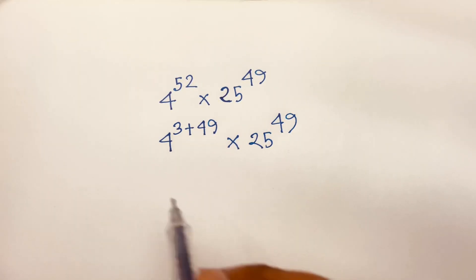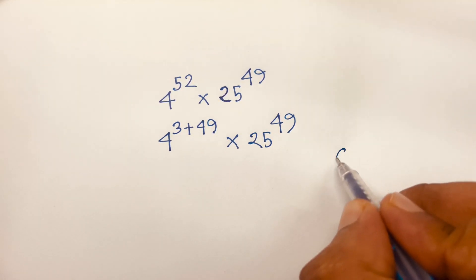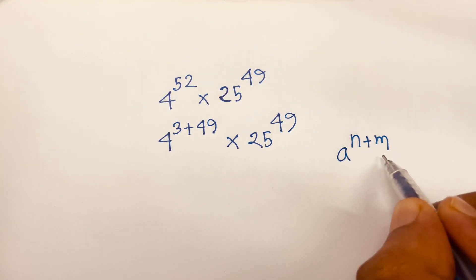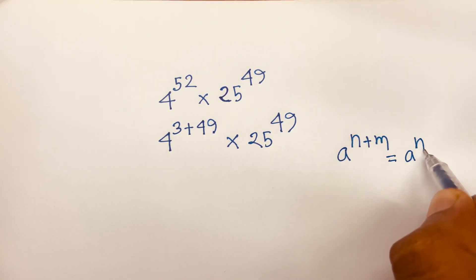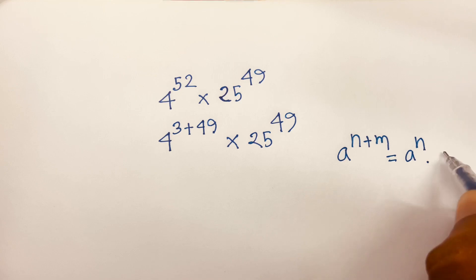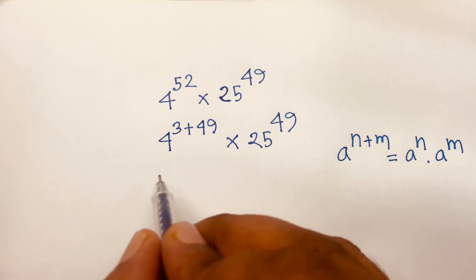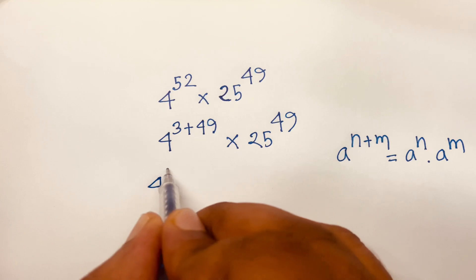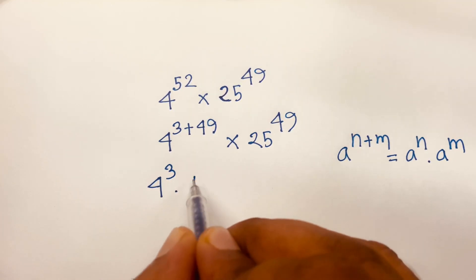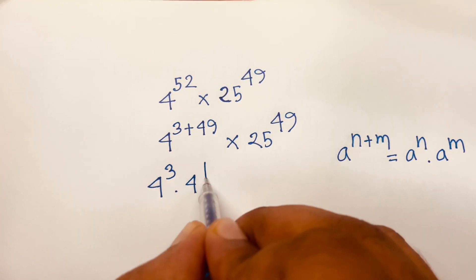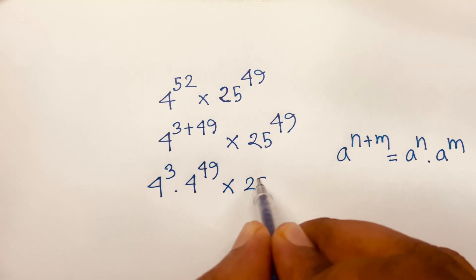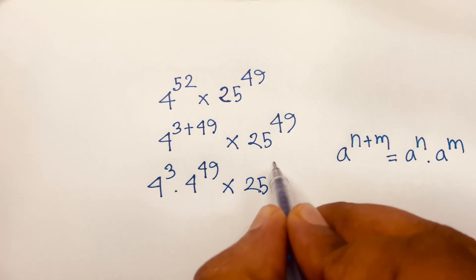We use the rule that a to the power n plus m is equal to a to the power n times a to the power m. Applying this rule, we get 4 to the power 3 times 4 to the power 49, and 25 to the power 49.